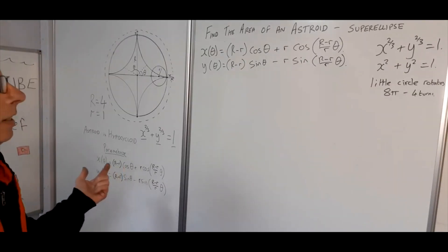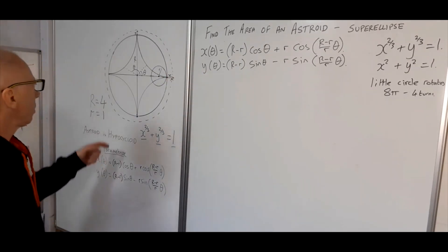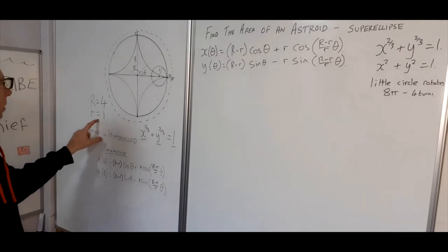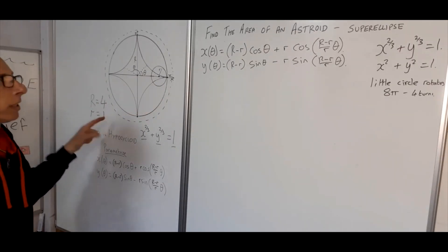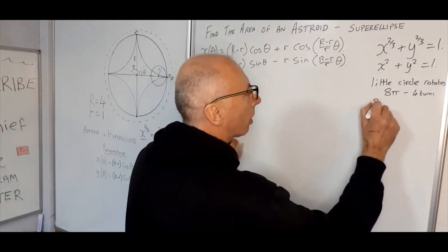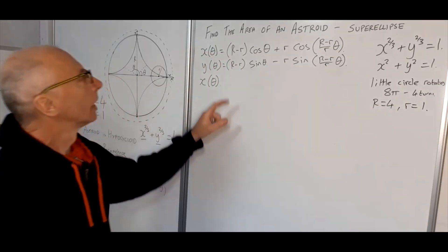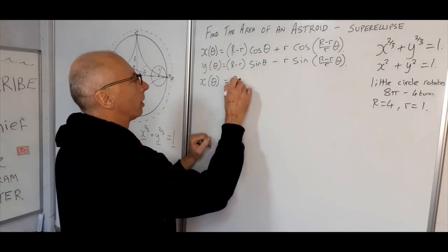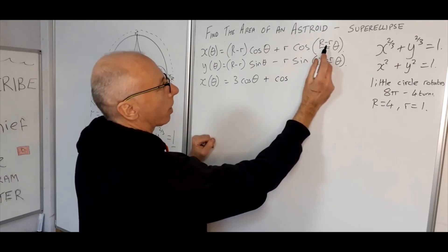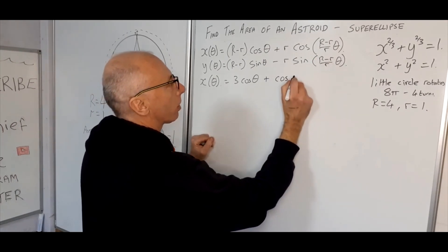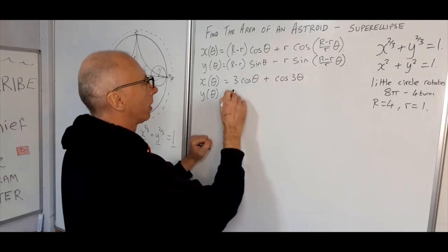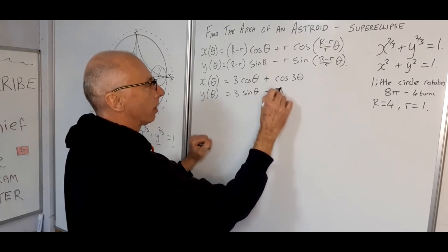We can now calculate these parametric equations with respect to θ. The big radius R equals four times the little radius r, so we put R = 4 and r = 1. That gives x(θ) = 3cosθ + cos(3θ), and similarly y(θ) = 3sinθ − sin(3θ).